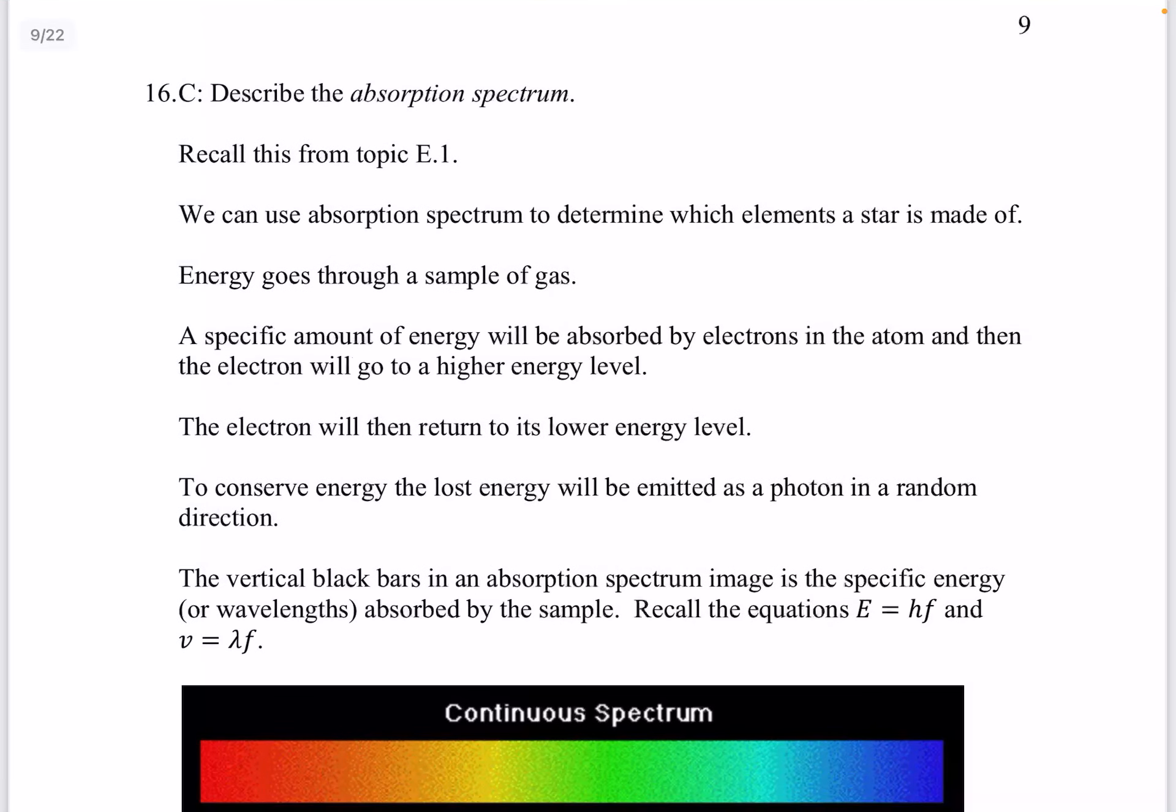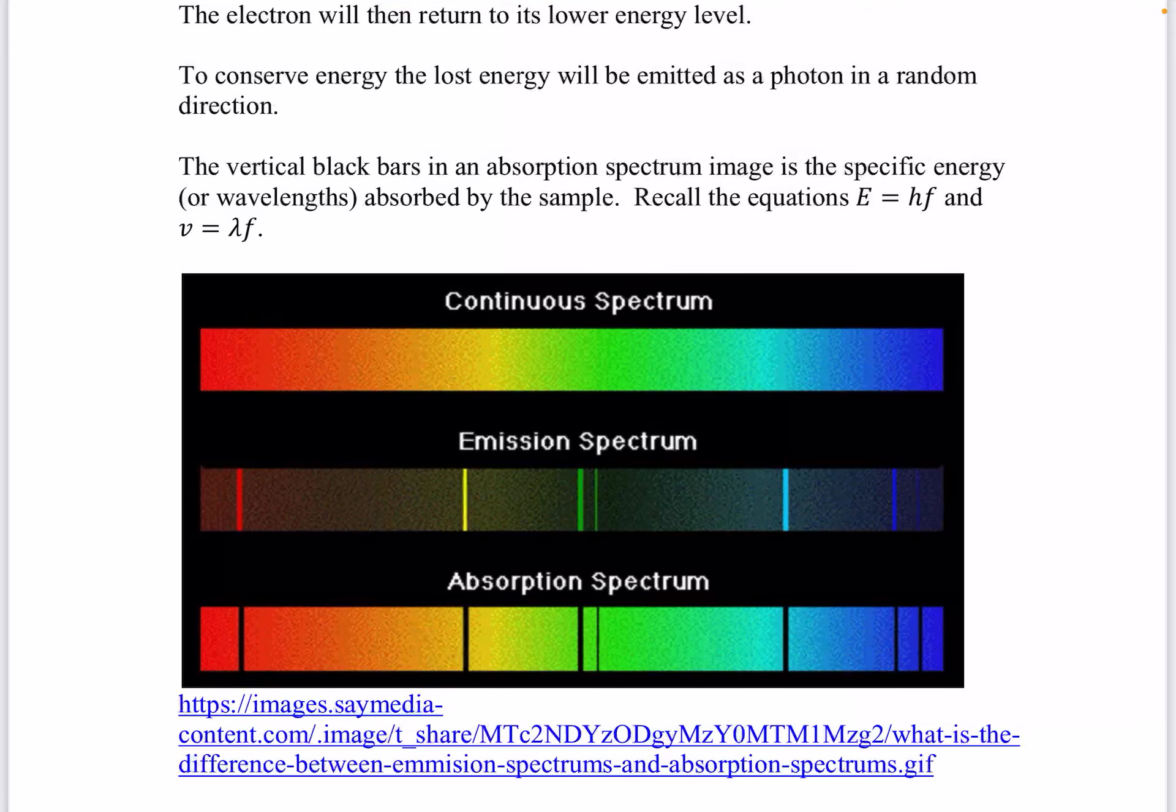Question 16. Describe the absorption spectrum. So this is from topic E.1. We can use absorption spectrum to determine which elements a star is made of. Energy goes through a sample of gas. A specific amount of energy will be absorbed by electrons in the atom, and then the electron will go to a higher energy level. The electron will then return to its lower energy level. To conserve energy, the lost energy will be emitted as a photon in a random direction. The vertical black bars in an absorption spectrum image is a specific energy or wavelength absorbed by the sample. So a continuous spectrum is what we see at the top. Both the absorption spectrum and emission spectrum tell us what elements an object is made of.